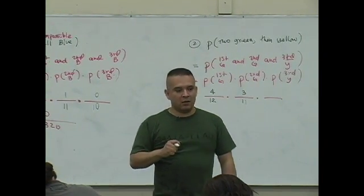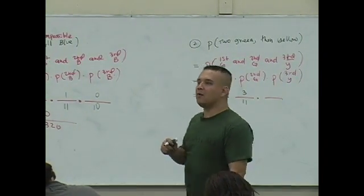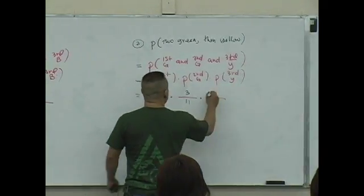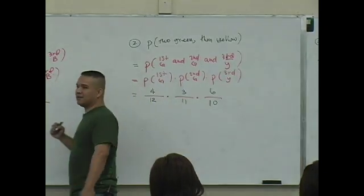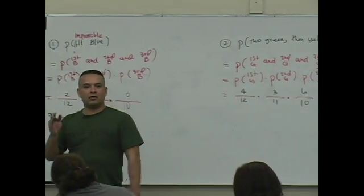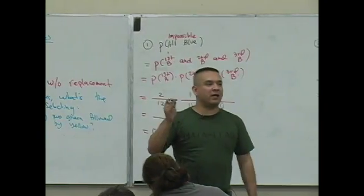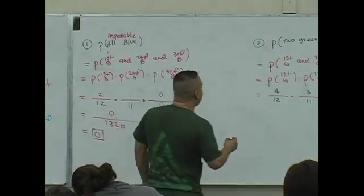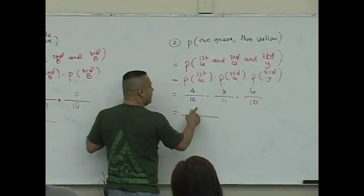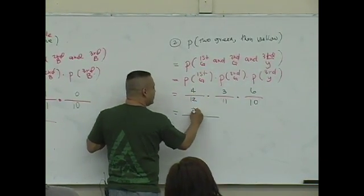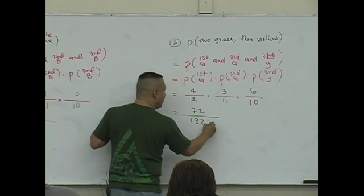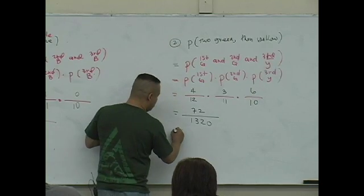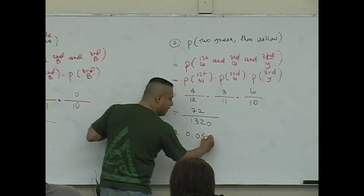What's the probability that the third is yellow? Six out of ten. Because you're throwing marbles out the window, which means they're decreasing by one. So what do you get when you multiply this? That's 72 over 1,320. What is that approximated to the nearest thousandths? About 0.055.